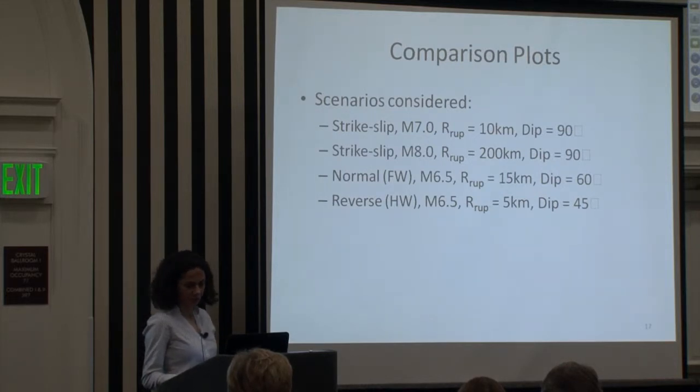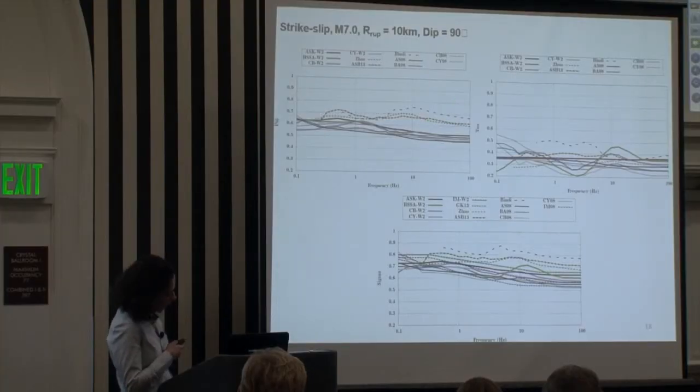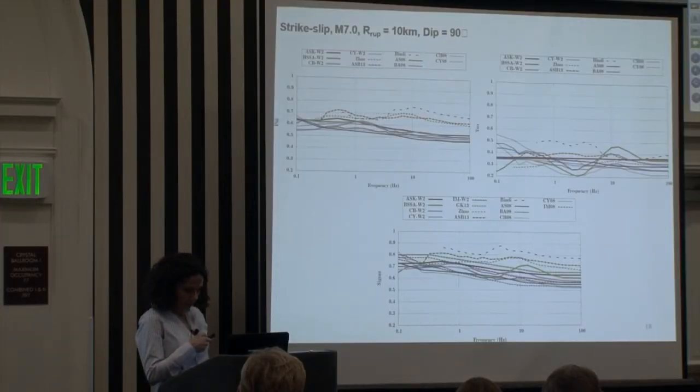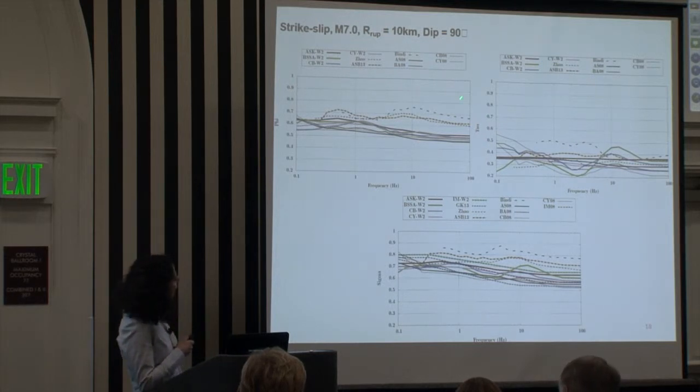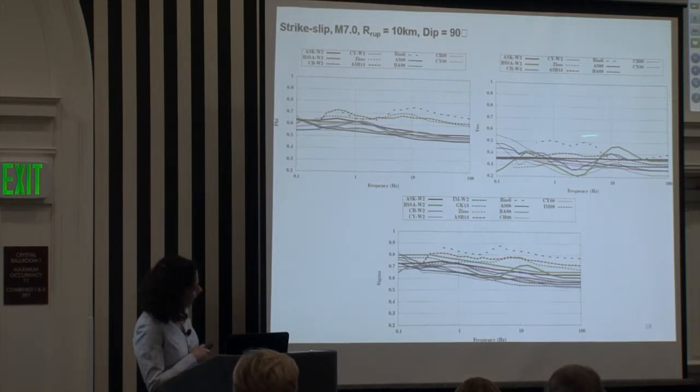These plots are provided to me by Nick Grazer. So this is the strike slip magnitude 7 scenario. On the left, you have phi versus frequency. On the right, you have tau versus frequency. And then on the bottom is the total standard deviation. Some of the features, and this has been repeated over the last couple of days, is Bindi, Akkar et al., and Zhao have relatively high phi compared to the rest of the models. For tau, we have Bindi again showing relatively high tau values.